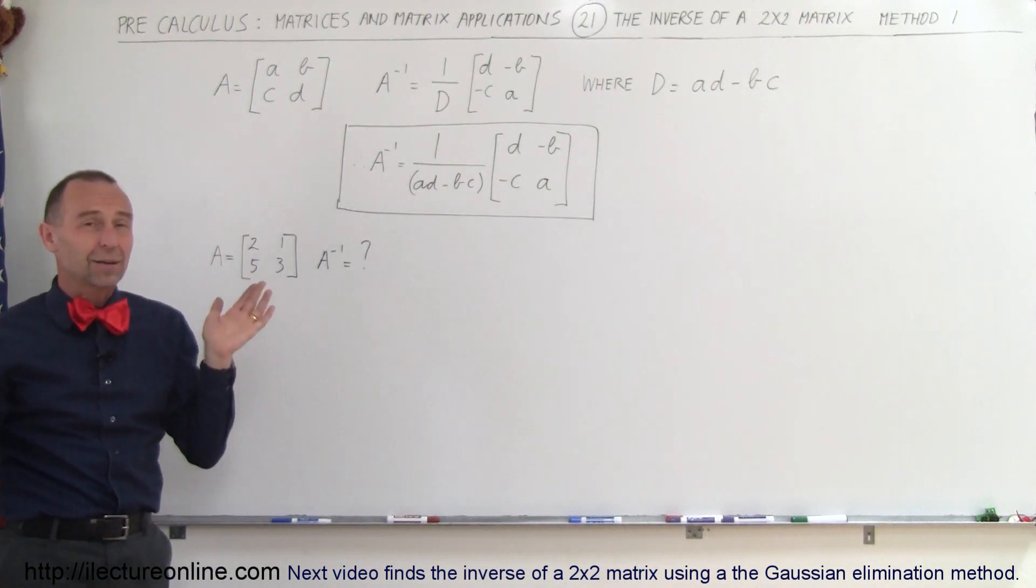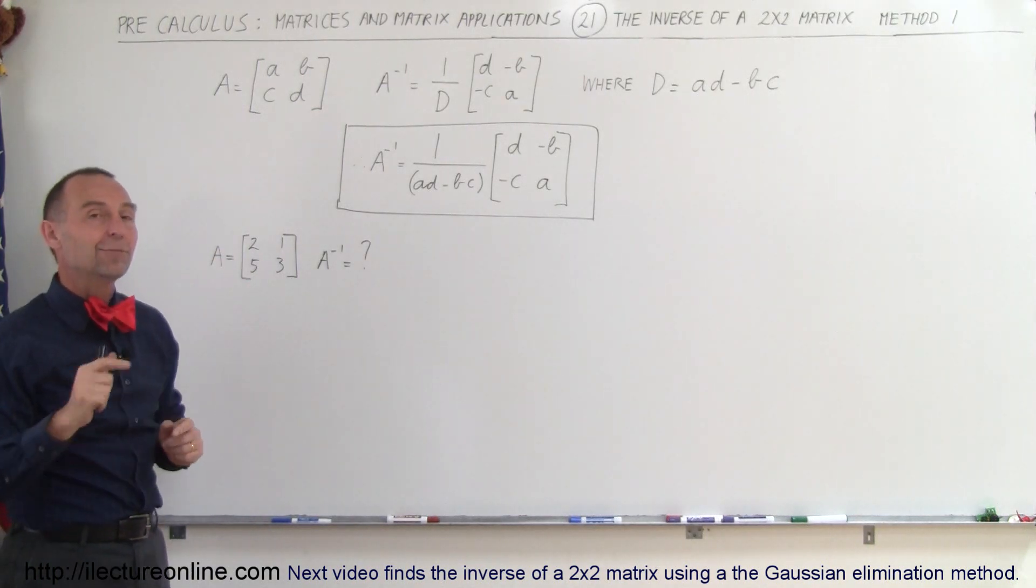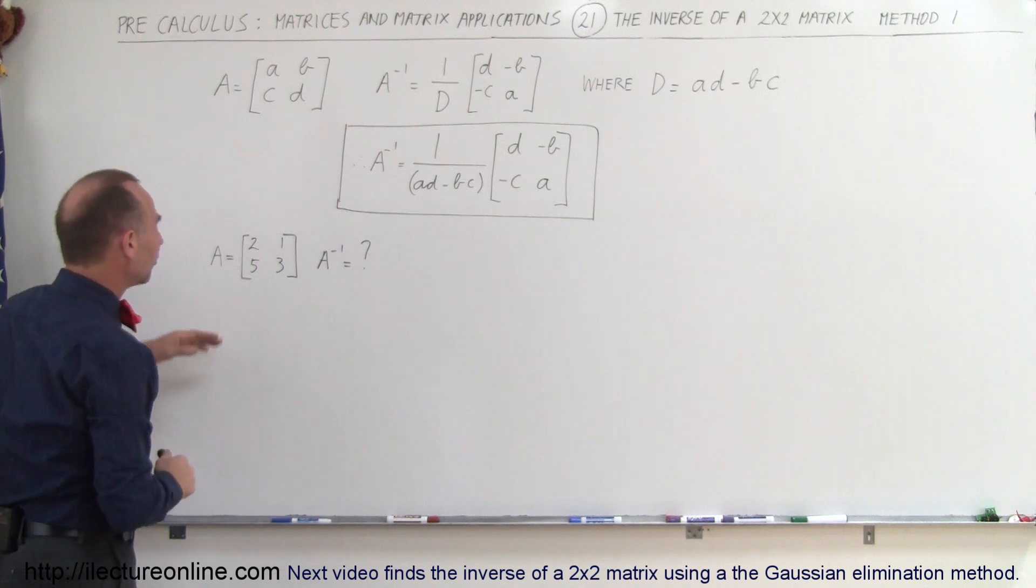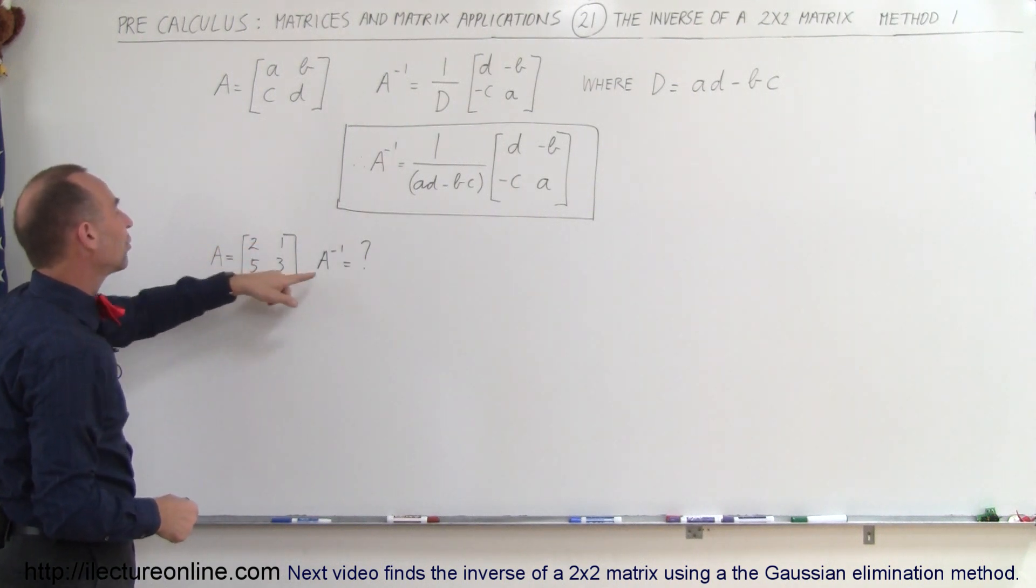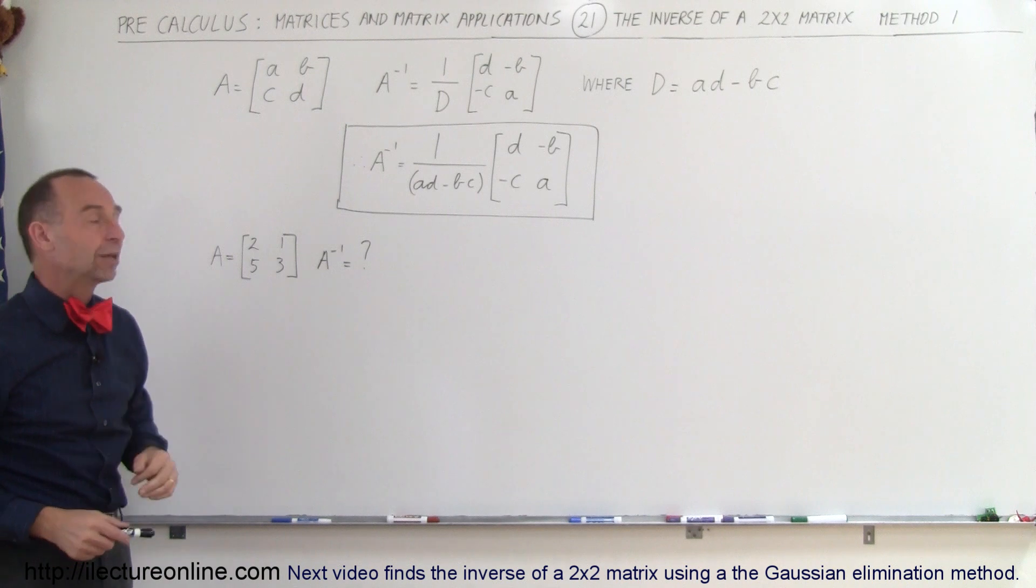You may say, wow, that's a little complicated. Actually, it's not, and let me show you the example. So here we have a matrix A with the elements 2, 1, 5, and 3, and we're trying to find the inverse of the matrix.